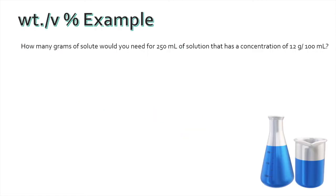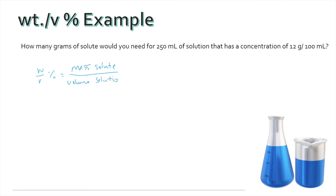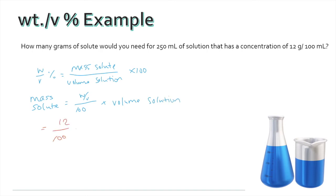For a weight per volume percent example, the question asks: how many grams of solute would you need for 250 milliliters of solution that has a concentration of 12 grams per 100 milliliters? Weight per volume percent is equal to the mass of the solute divided by the volume of the solution, multiplied by 100. Rearranging, the mass of the solute equals weight per volume percent divided by 100, multiplied by the volume of the solution. Plugging in 12 divided by 100, multiplied by 250 milliliters, we get a total of 30 grams of solute.